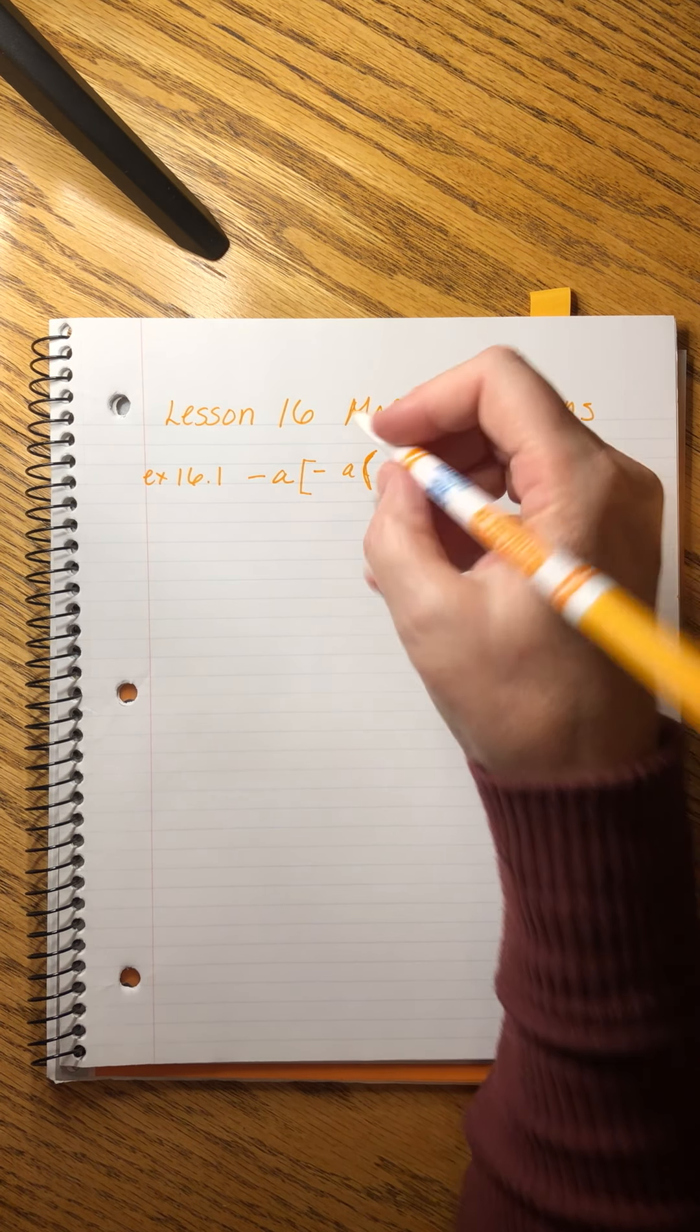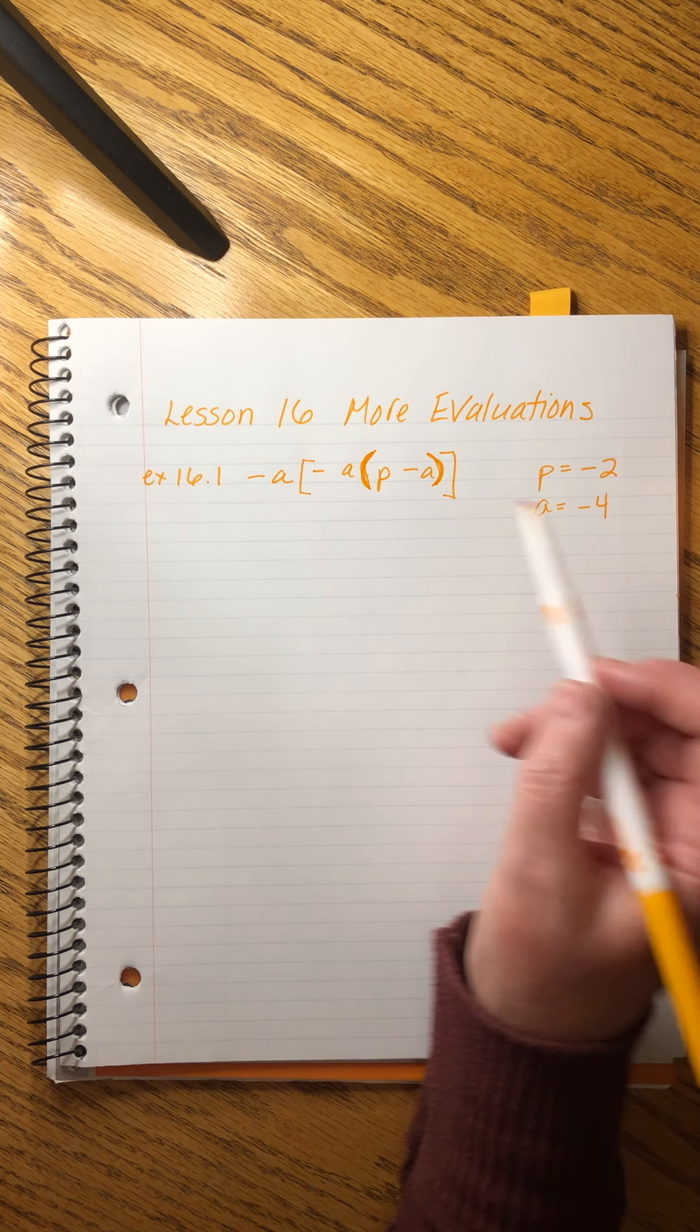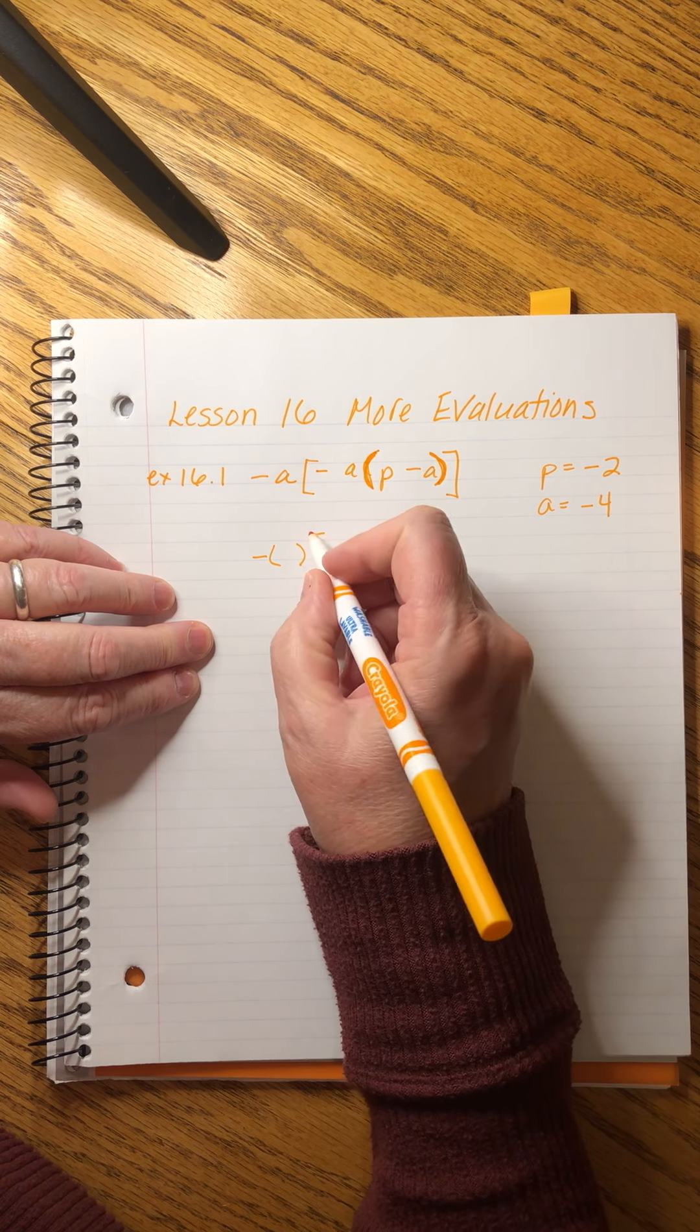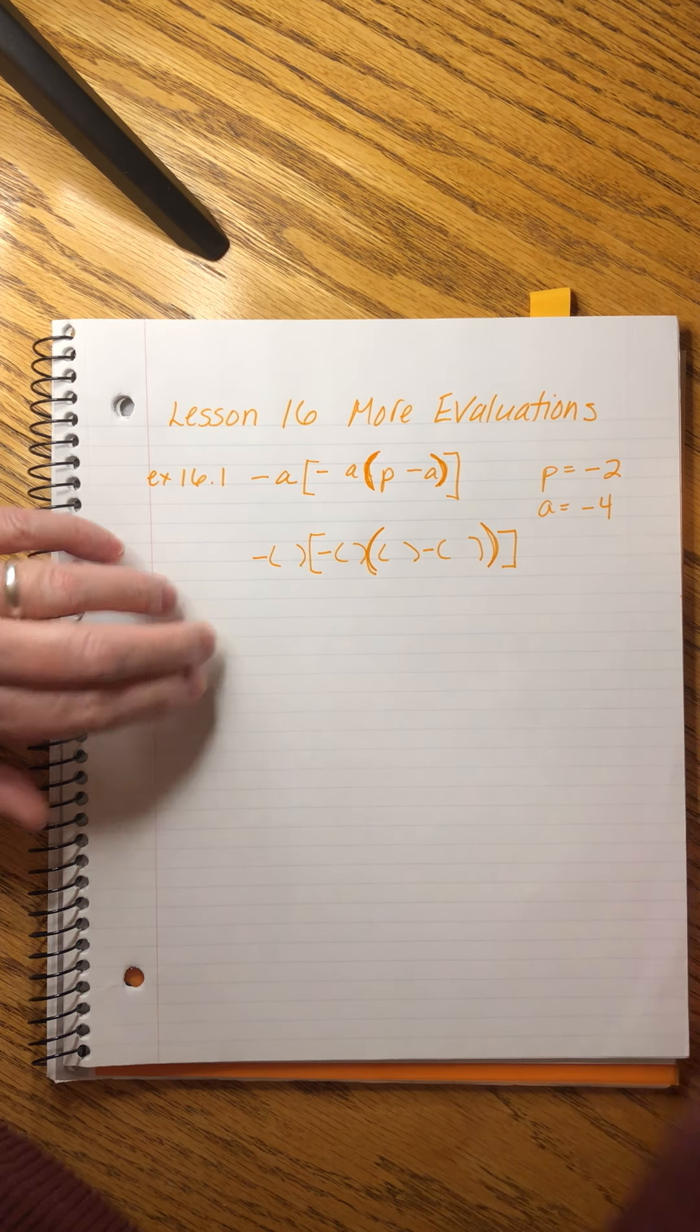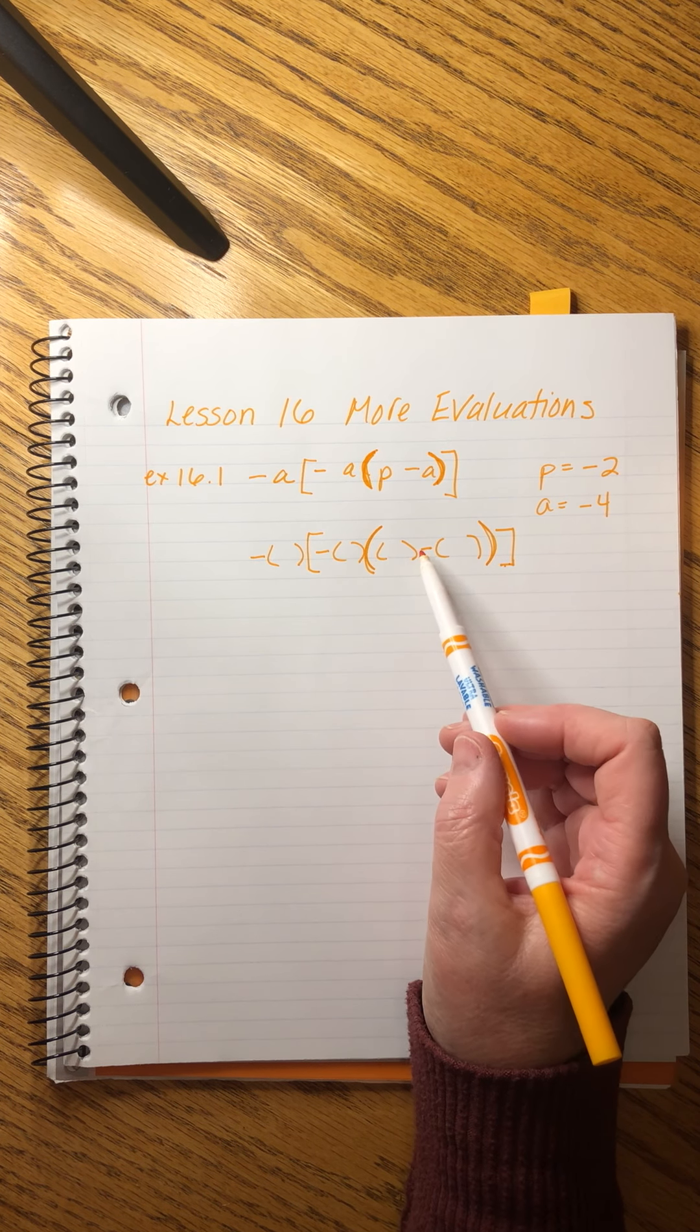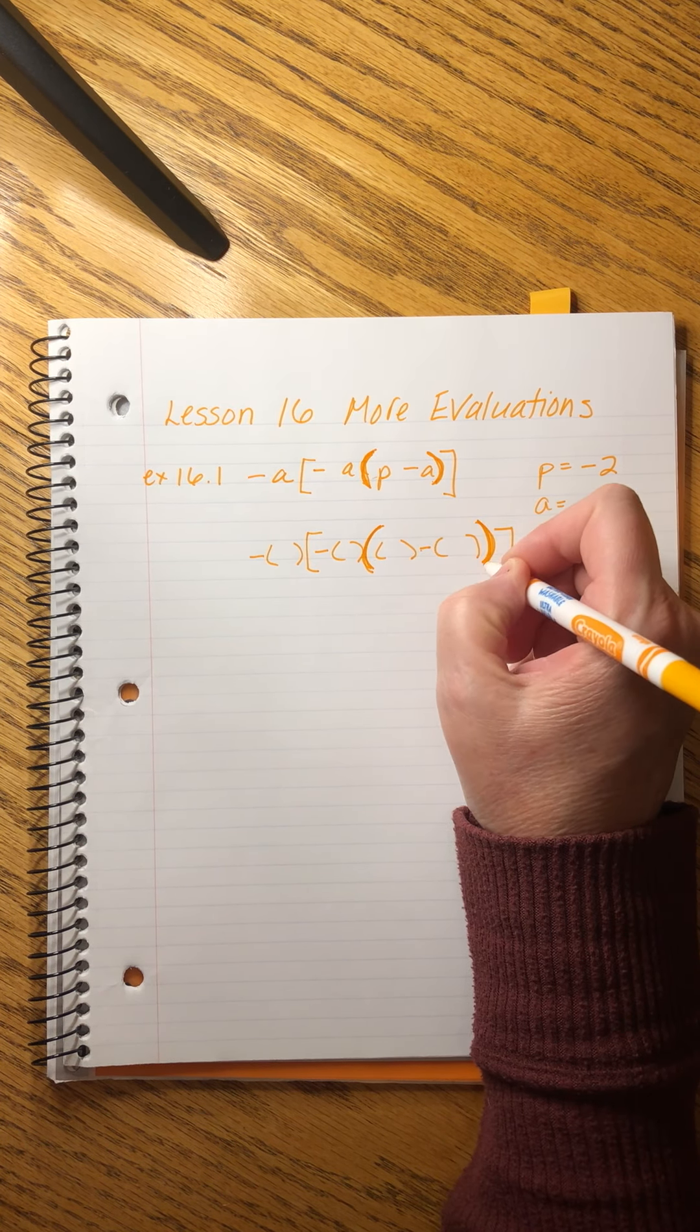And then it tells us that P equals minus 2 and A equals minus 4. This is how I want you to set these problems up. I want you to make them as neat as you can, but write the expression first with the letters. Write the values over here that we're plugging in. Then we're going to write this again with a bucket for every letter. There's the big parentheses. The square ones are not as much of a problem because we're not adding any of those. It's the buckets and the original parentheses that can get confusing.